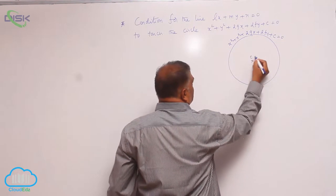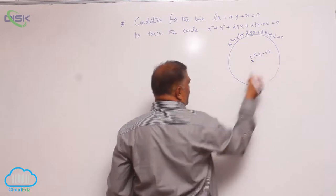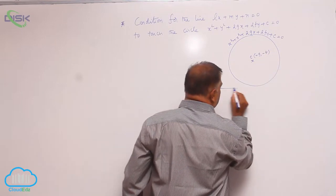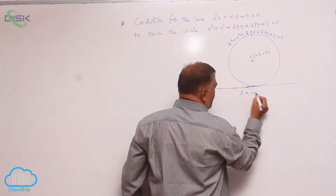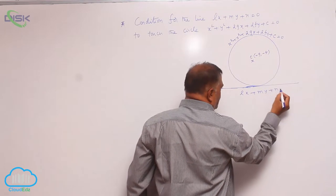You know that center is minus g comma minus f and this is going to be the line L x plus m y plus n is equal to 0.